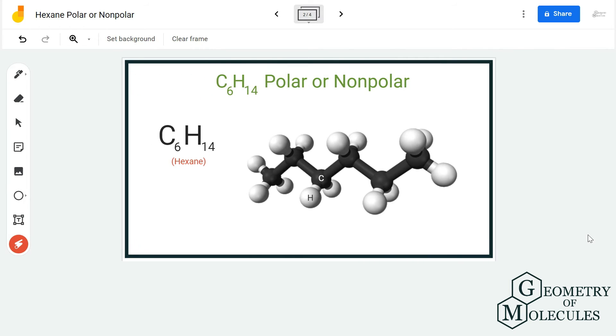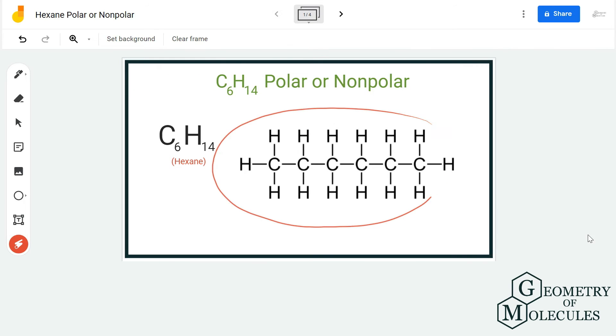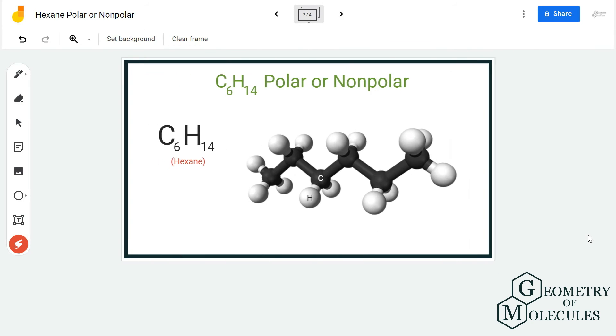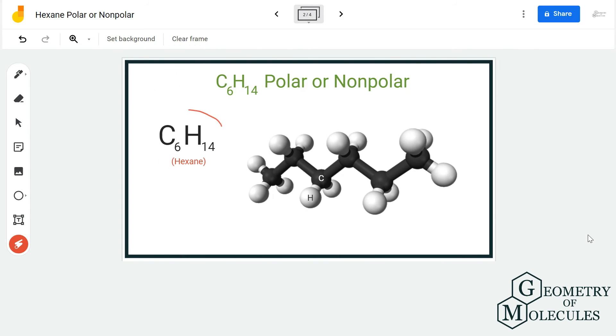As the differences of electronegativities of both carbon and hydrogen atoms are not that much, there will be no net dipole moment, which means there will be no formation of poles in this molecule, making hexane C6H14 a nonpolar molecule.